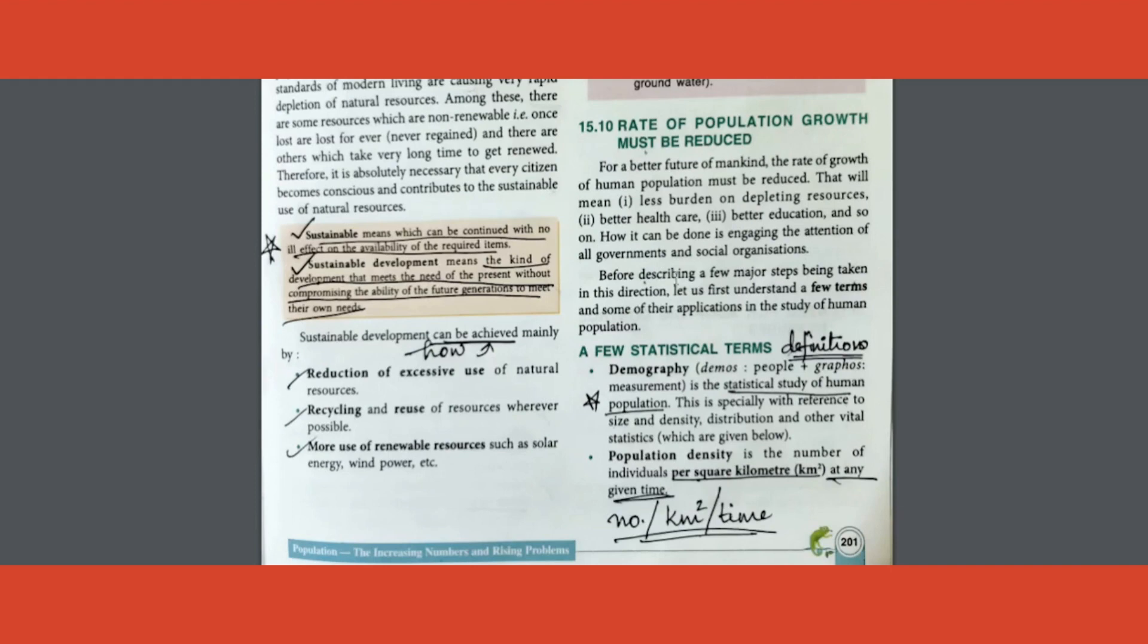Very important and most frequent question from this chapter is coming up. That is define demography, define population density, and so on. Here we have already marked few things for you. Please focus. Demography: statistical study of human population, enough to write. Next part, population density.